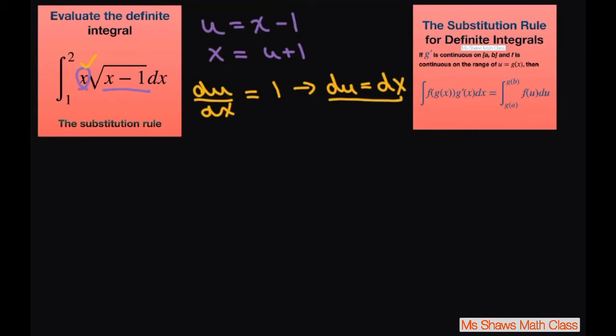The only other thing we have to do is use the substitution rule. Since we're not going to substitute this back in, we're going to have to change our limits. Looking back at this equation, if x equals 1 then u is going to equal 0. If x equals 2 then u is going to equal 1.